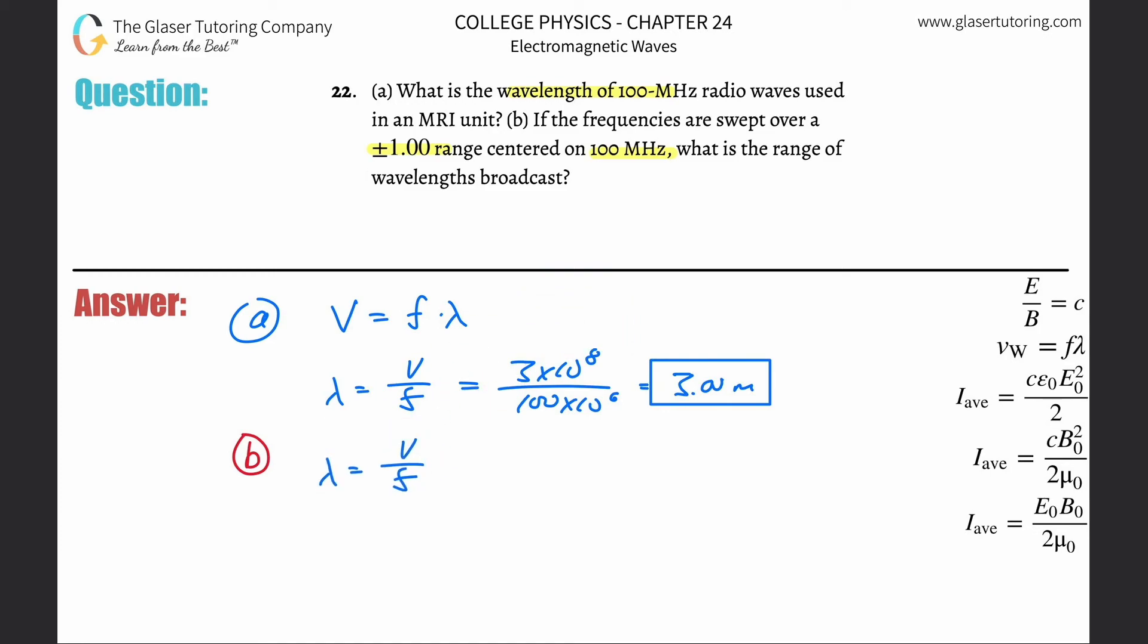Let's just copy this equation. So the wavelength here is going to be equal to the velocity divided by the frequency. The speed of light is not changing. The speed of the electromagnetic wave is not changing, but the frequency is.